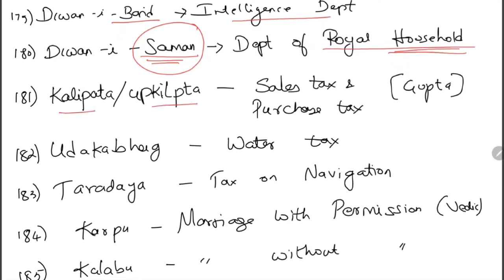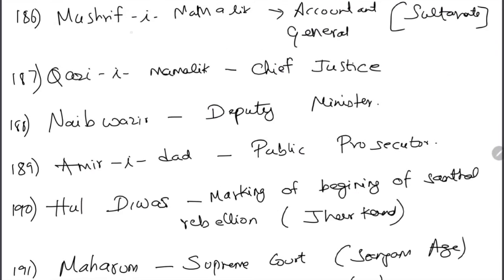Diwani-i-Saman was the department of royal household — 'saman' means household things (vegetables, spices, vessels) in common parlance, so it is easy to remember. Kalipata and Upakita were sales tax or purchase tax during the Guptas. Udakabhaga was the water tax during the Guptas. Taradaya was tax on navigation. Karpu means marriage with permission during the Vedic period; Kalabu means marriage without permission.